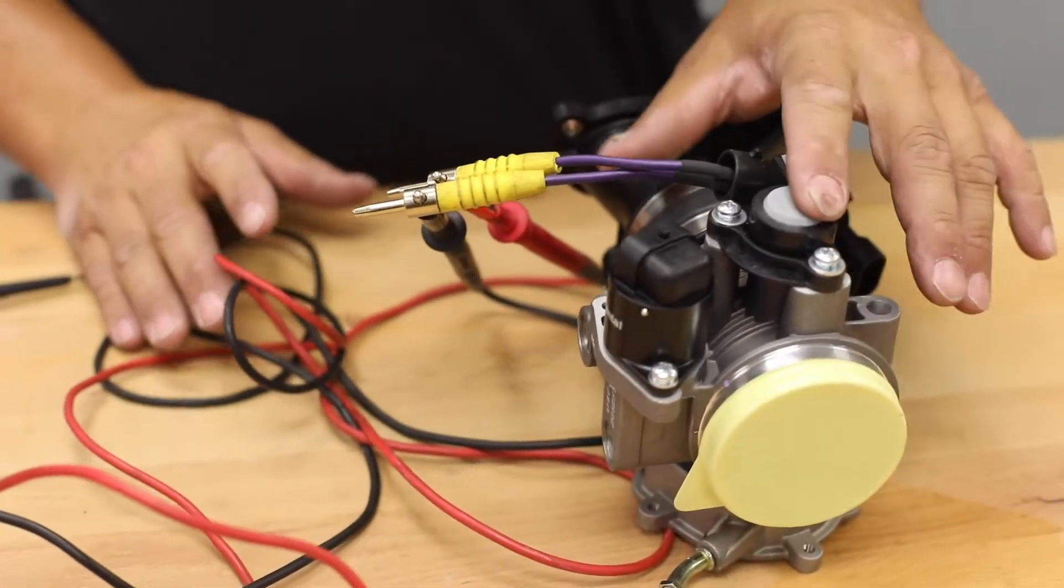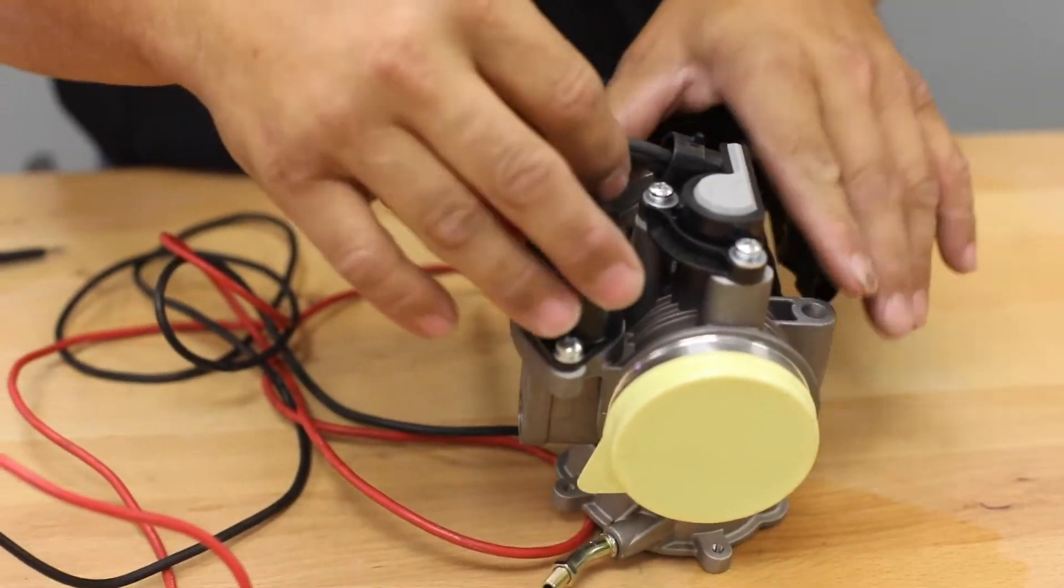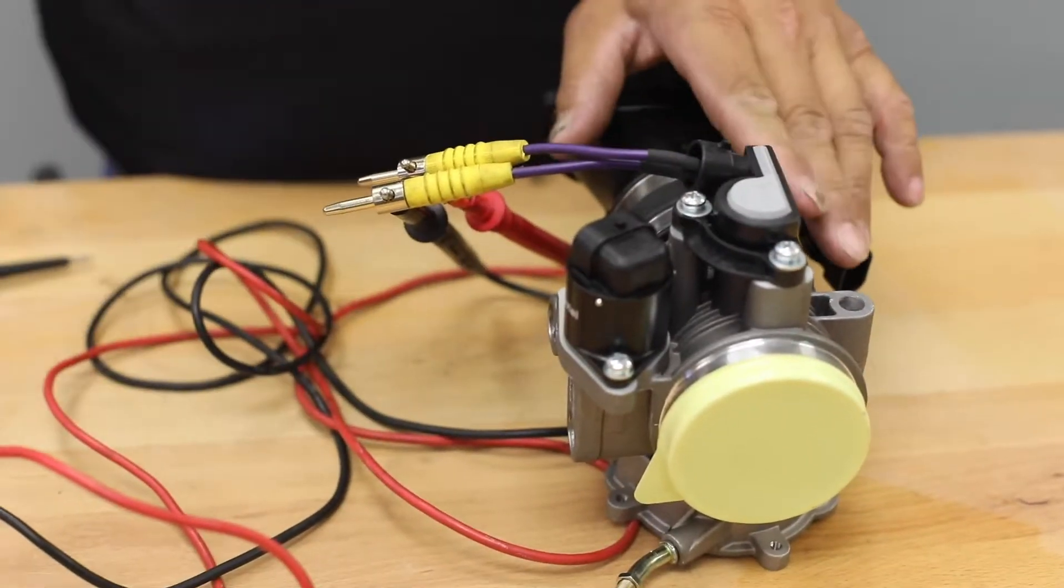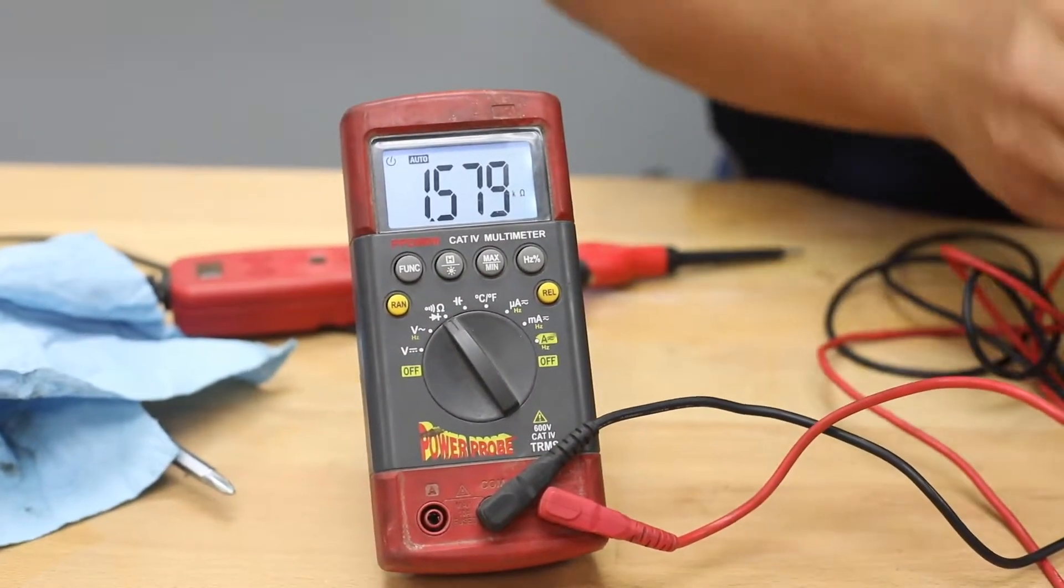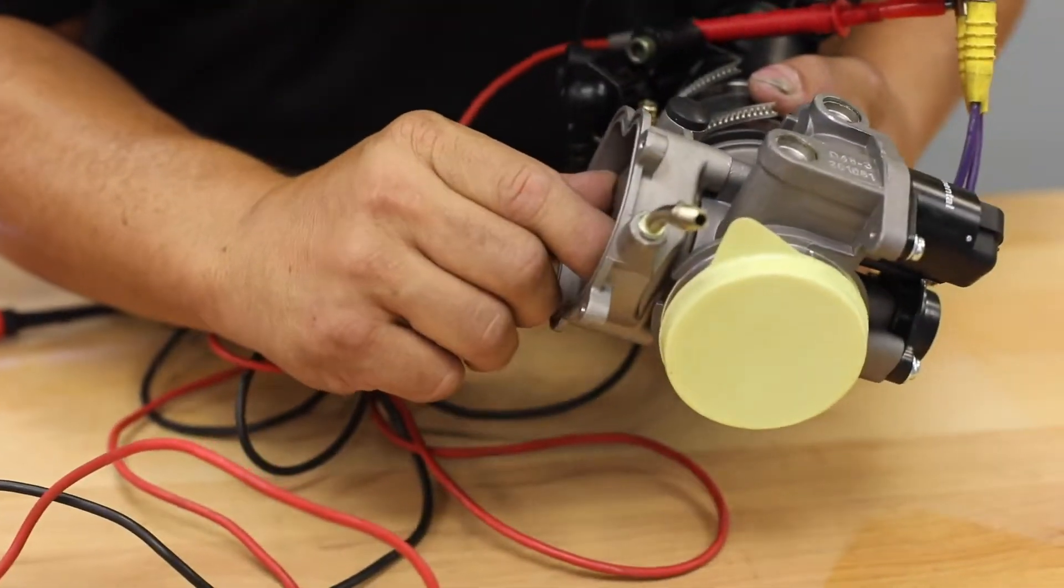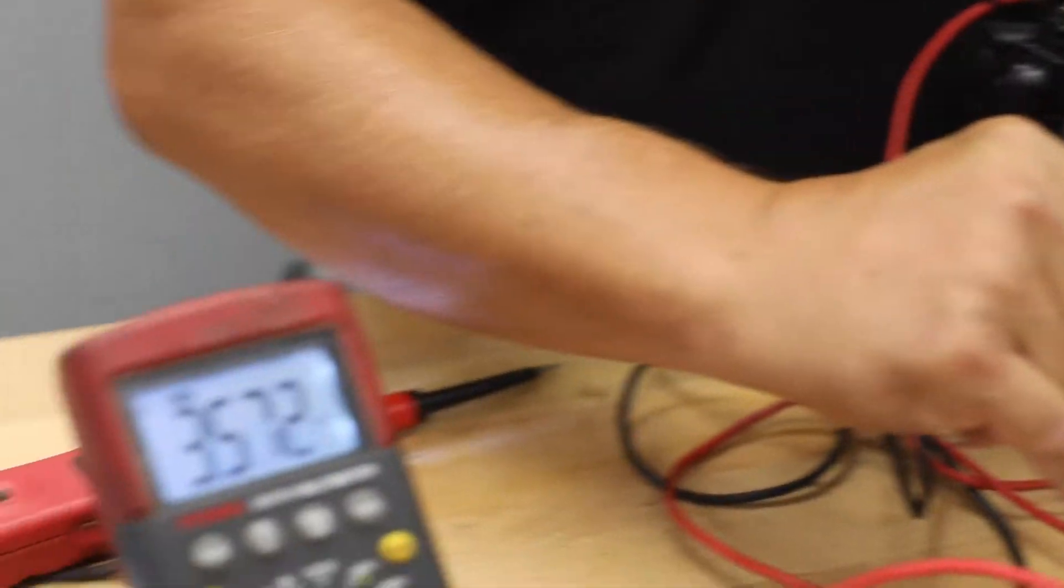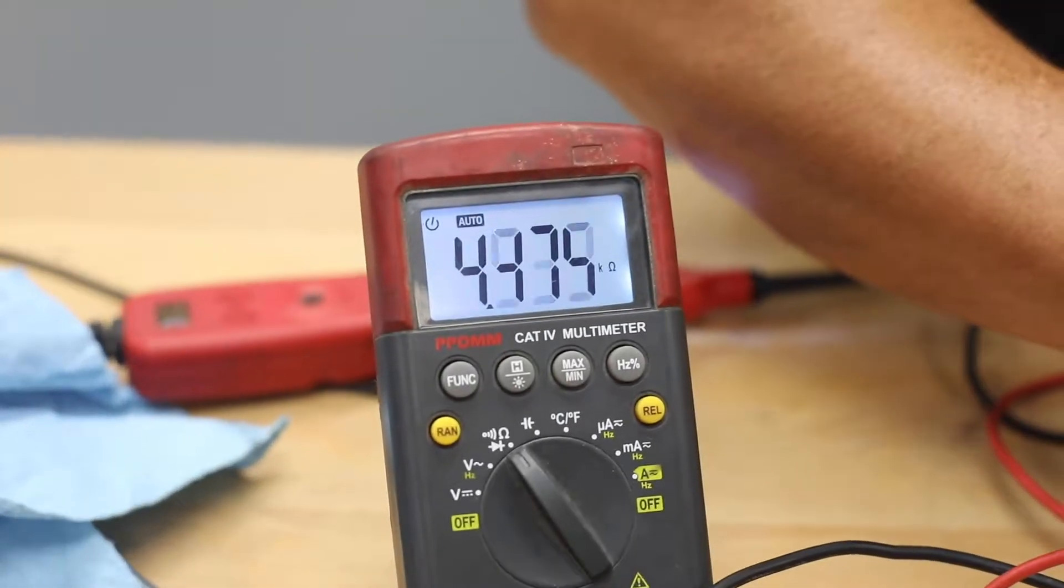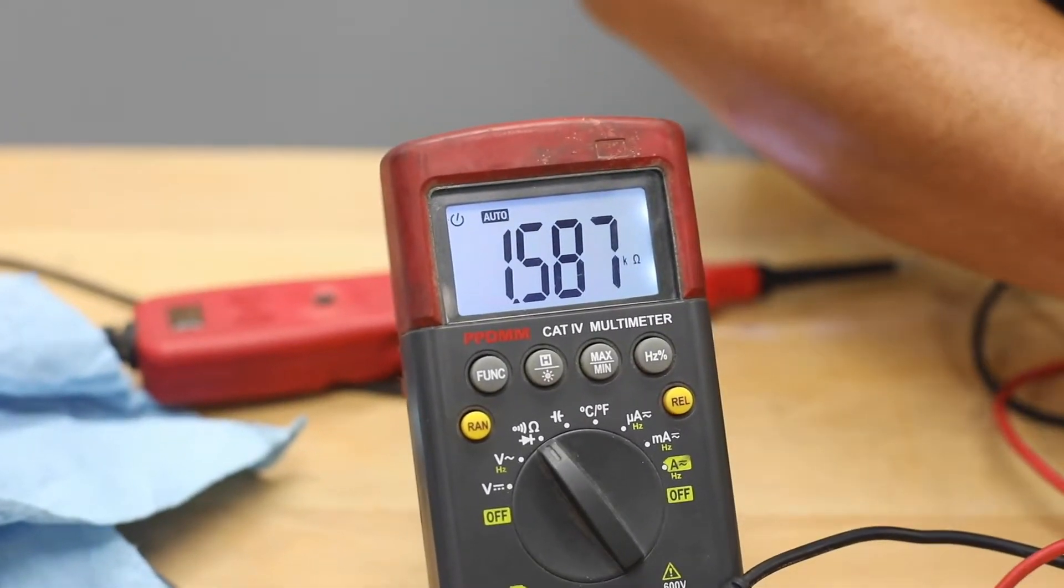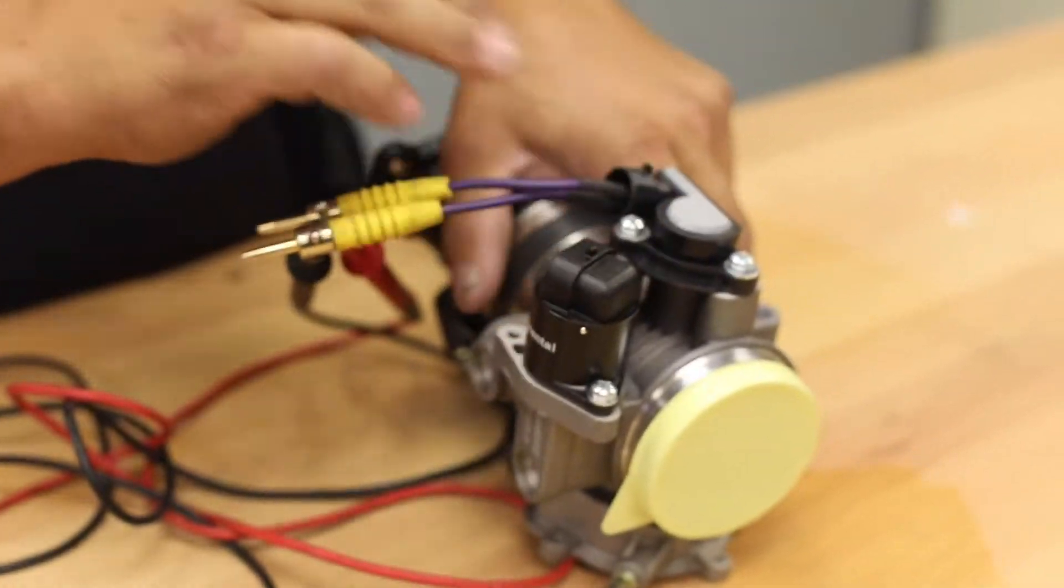First thing to do to test this is to plug in pin number two, pin number three with an ohmmeter. What you're going to want to do is turn your throttle and your ohms should change. As long as that is changing, that means that this potentiometer is working.